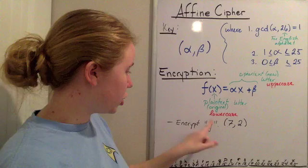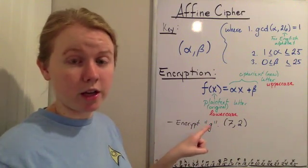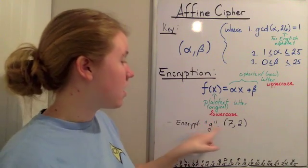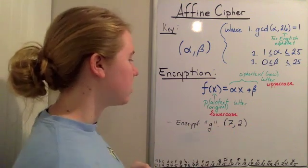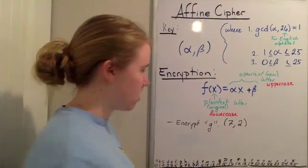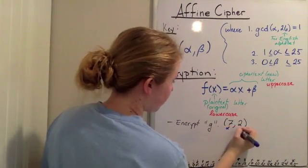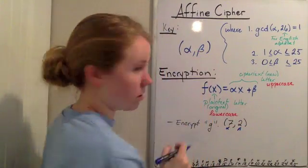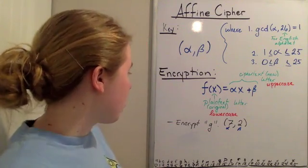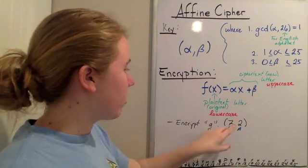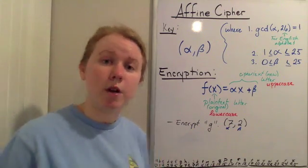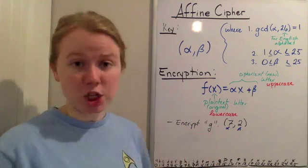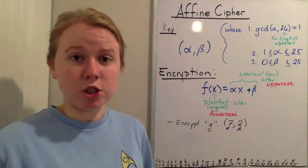I wrote here encrypt g, so notice I put it lowercase, that's my plain text. And here's our key, 7 and 2, where this, 7 comma 2, this is alpha, this is beta, so you can see there too. Alright, so we have our letter, we have our key. First thing we need to do is figure out, we're trying to encrypt g. What number is g?